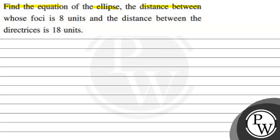The distance between the foci is 8 units and the distance between the directrices is 18 units. Then we have to solve this problem. Before that, we have to discuss some key concepts.